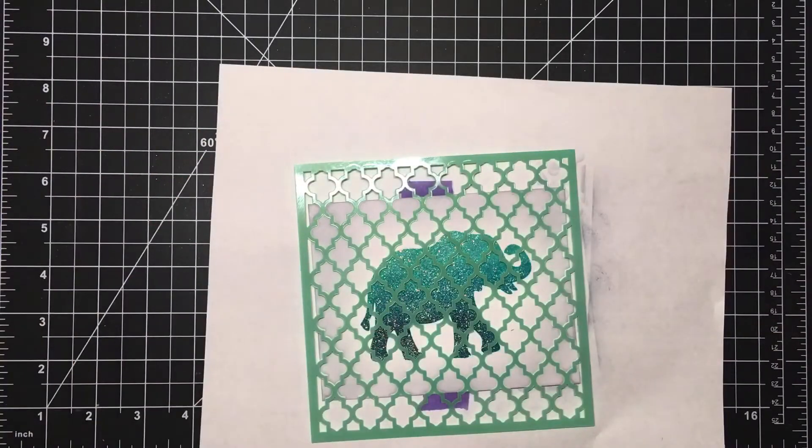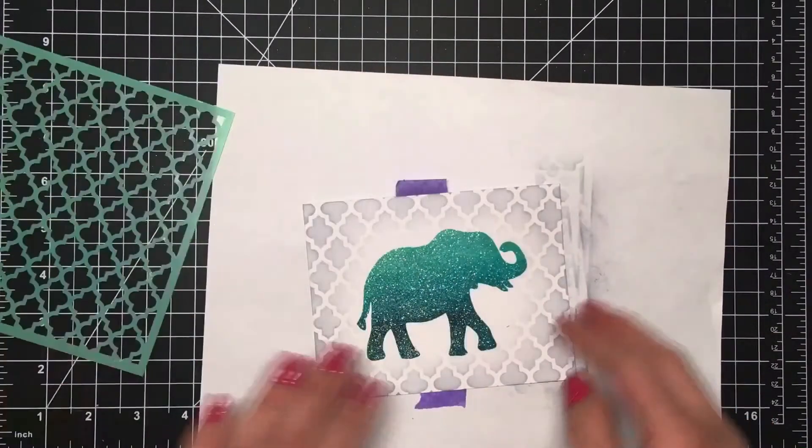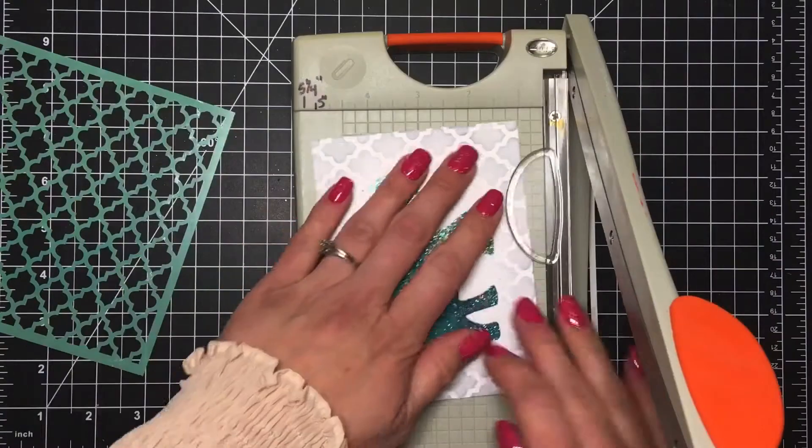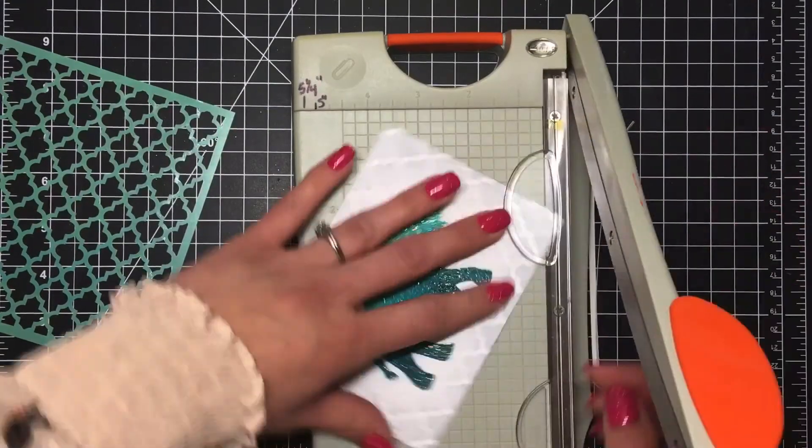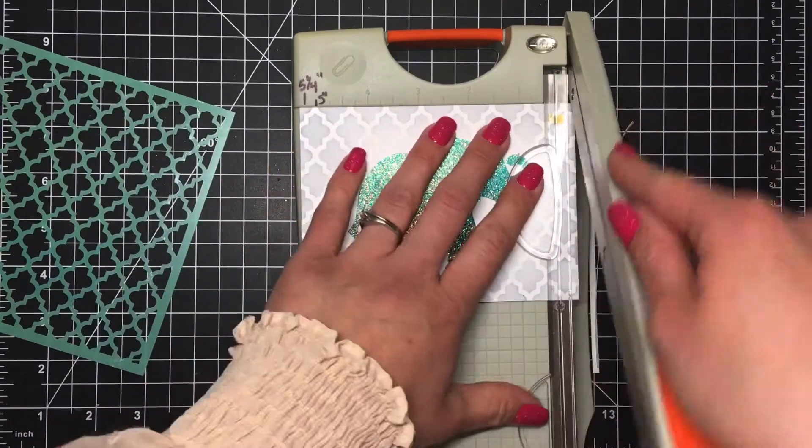Then I will remove that stencil and you can see the design that it left behind. When I'm happy with that I bring my Tonic guillotine paper trimmer in and trim off a little bit off of all four sides of that panel.